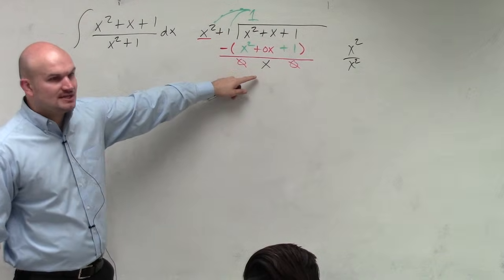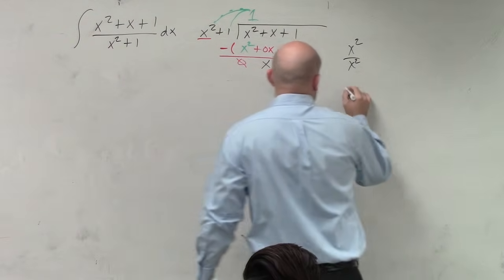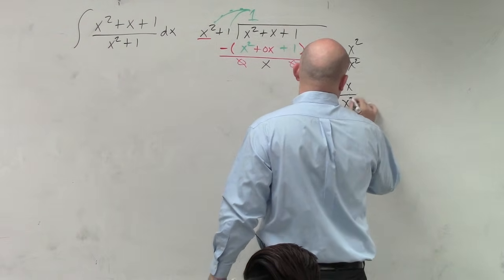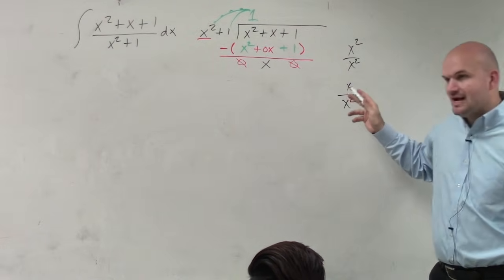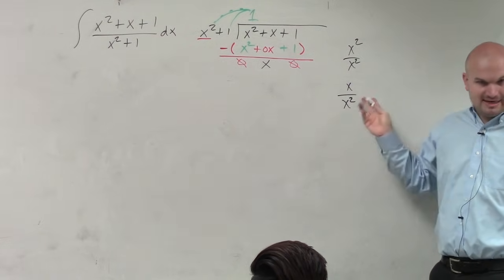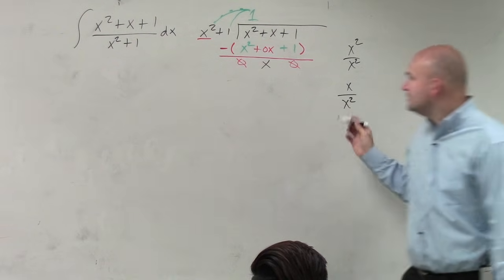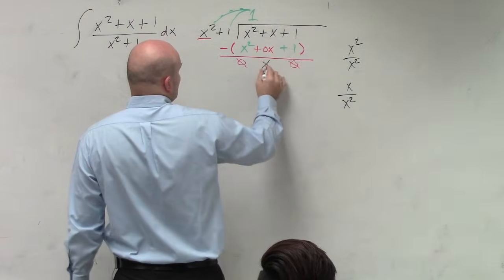Then, does x squared divide into x? How many times does x squared divide into x? Well, that's going to have a negative exponent. It actually doesn't evenly divide into it. So that's going to be our remainder.